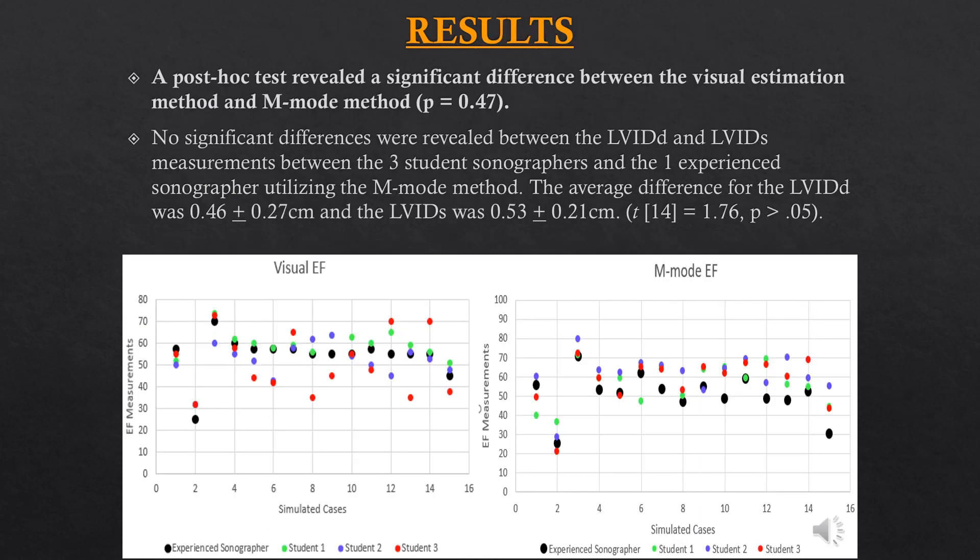Let's take a look at our results. We performed an ANOVA which demonstrated significant differences between ejection fraction measurements between the methods; however, as you know, an ANOVA doesn't tell you where the difference lies. So we performed post-hoc testing and identified a significant difference between the visual estimation and M-mode method. Bringing your attention to the scatter plot, each color represents a different person where the black dot is myself, the experienced sonographer, and as you can see there is greater spread among the dots on the visual ejection fraction.